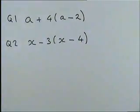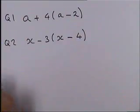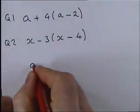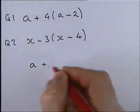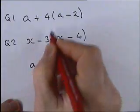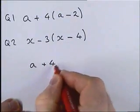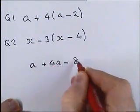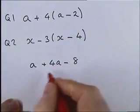Let's look at question one: we have a + 4(a − 2). I'm going to expand the bracket directly this time — giving 4a − 8 — though you could use a grid if you prefer.